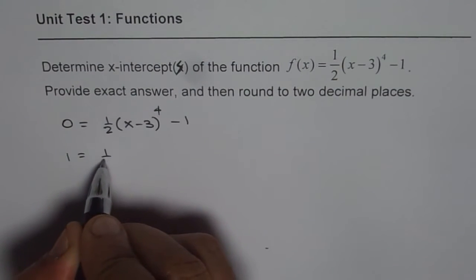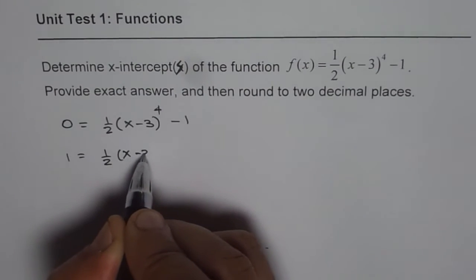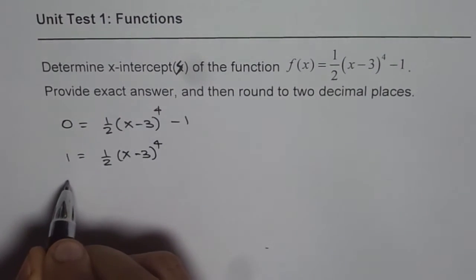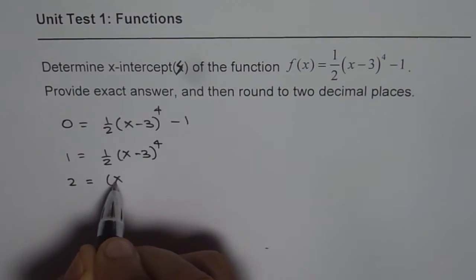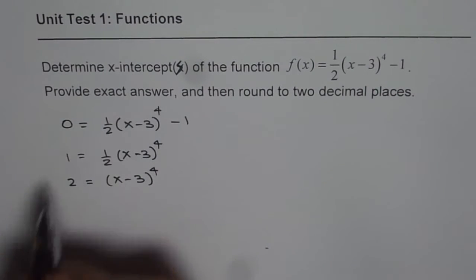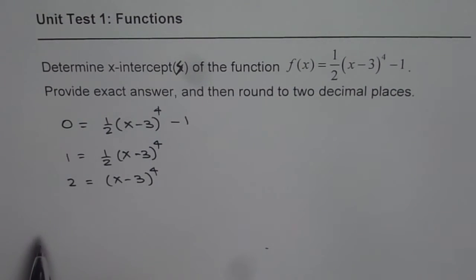So we get 1 equals one-half of (x minus 3) to the power of 4, or 2 equals (x minus 3) to the power of 4. So we just cross-multiply or multiply both sides by 2.